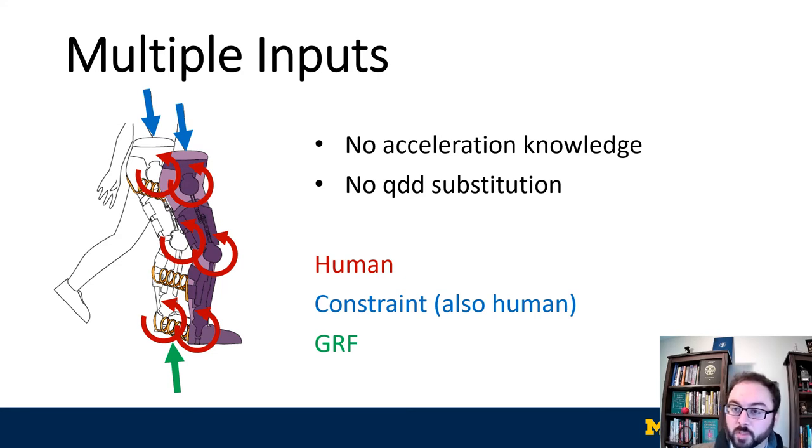Additionally, the joint accelerations, which would require differentiating encoders, are treated as unavailable. The existence of unknown inputs prevents us from exploiting algebraic substitutions based on the expression for joint acceleration.